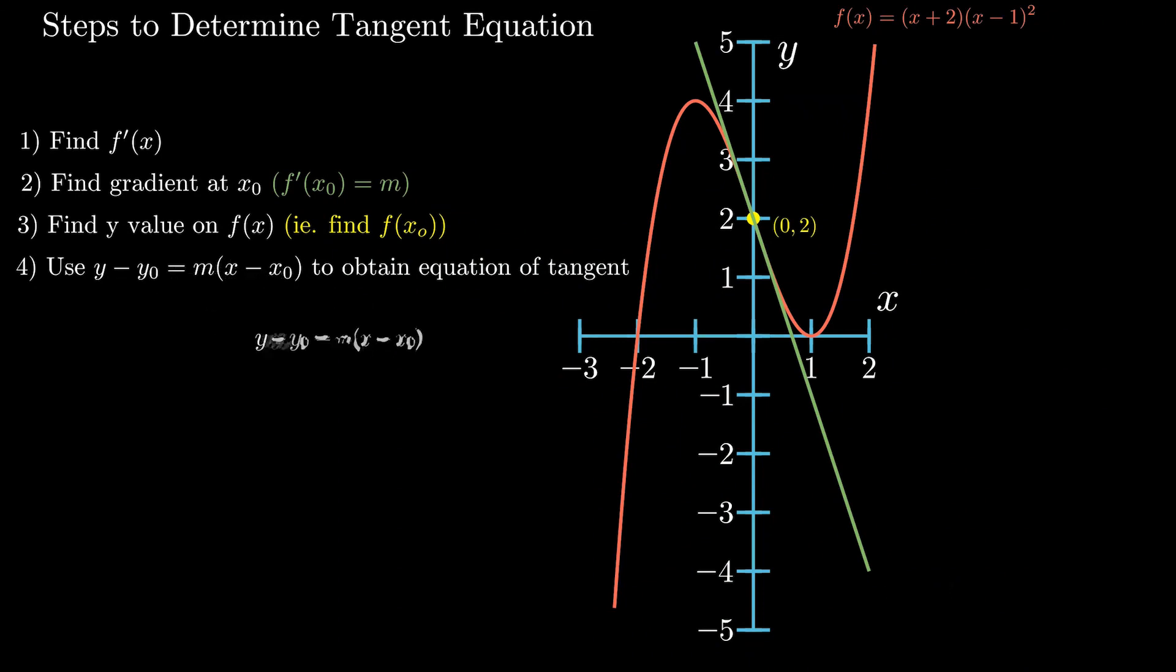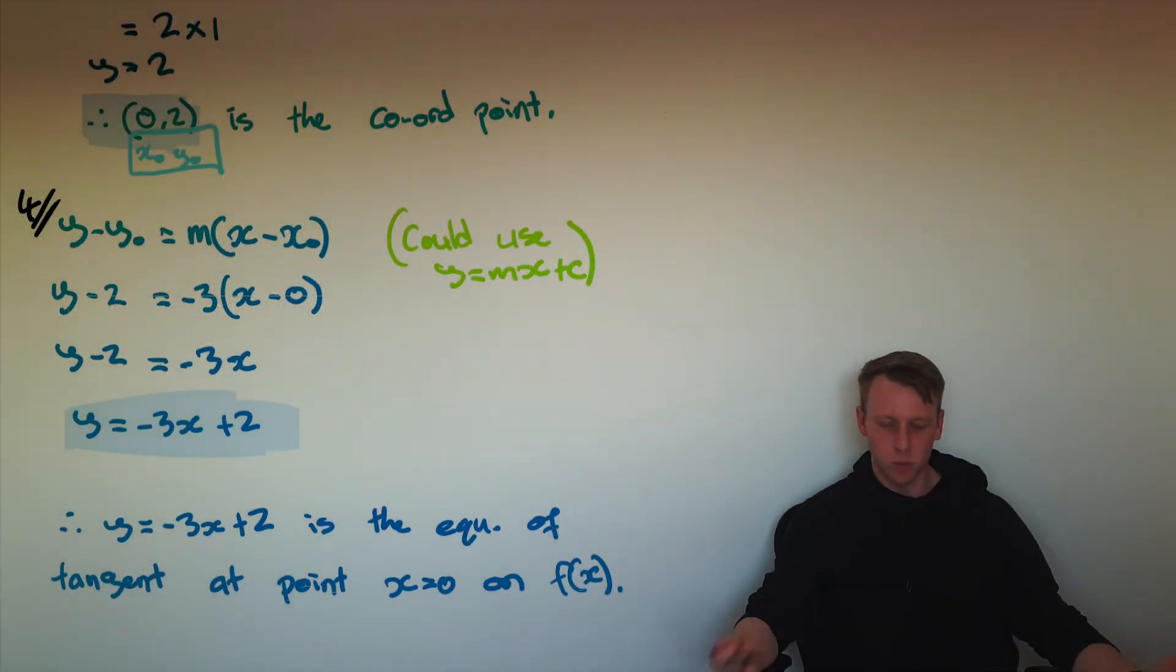Now, if we were to go one step further, maybe a question might ask, what is the equation of the normal, of the normal line? And the normal line is just the line that's perpendicular to the tangent line. And so we know that that gradient of that line is just going to be the negative reciprocal of our tangent line. And you're going to use the same x, y point.